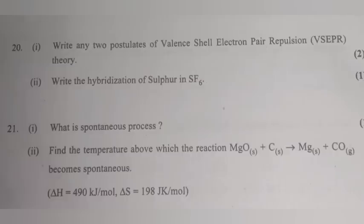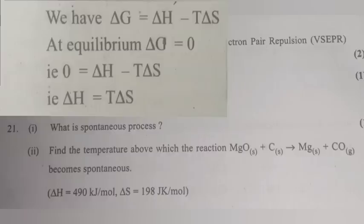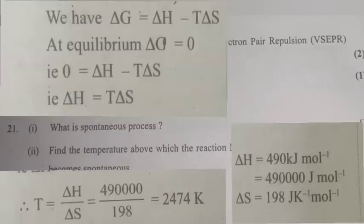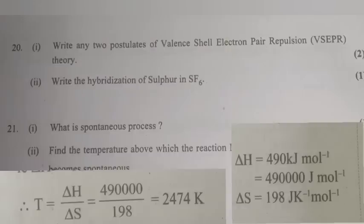Question 21.2: Find the temperature above which the reaction becomes spontaneous. Answer: We have ΔG = ΔH − TΔS. At equilibrium, ΔG = 0, that is 0 = ΔH − TΔS, so ΔH = TΔS. Therefore T = ΔH / ΔS = 419000 / 198 = 2474 K. That is, above 2474 Kelvin, the reaction becomes spontaneous.